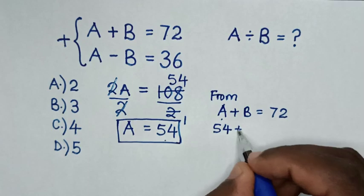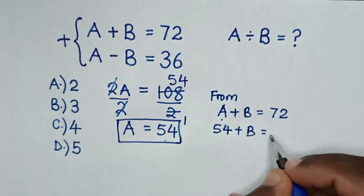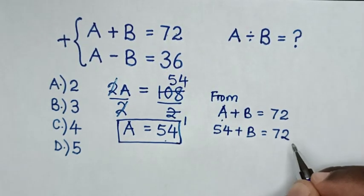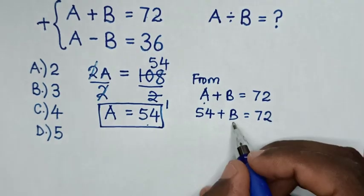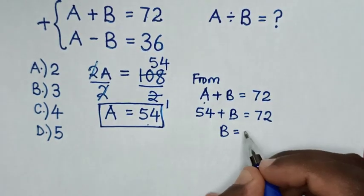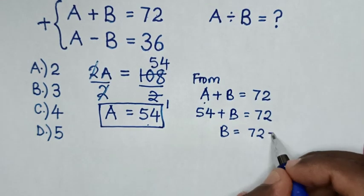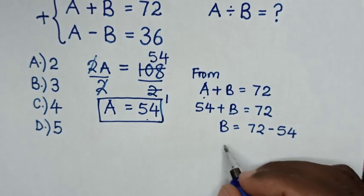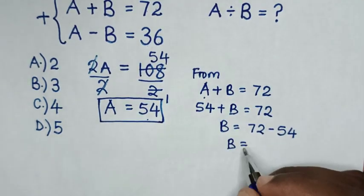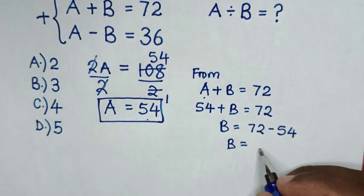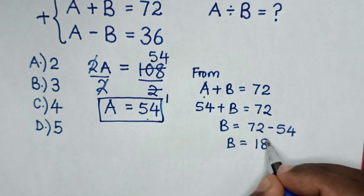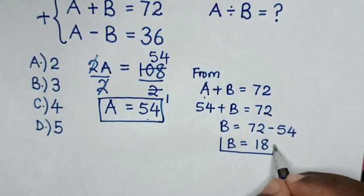So, here we'll substitute 54 plus B is equal to 72. Then, B will be equal to 72 minus 54 is 18. So, this is the value of B.